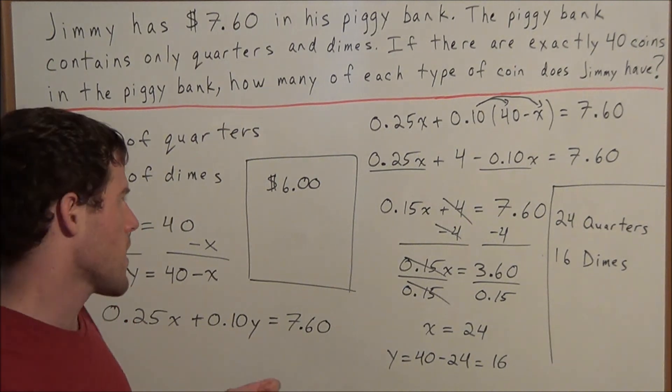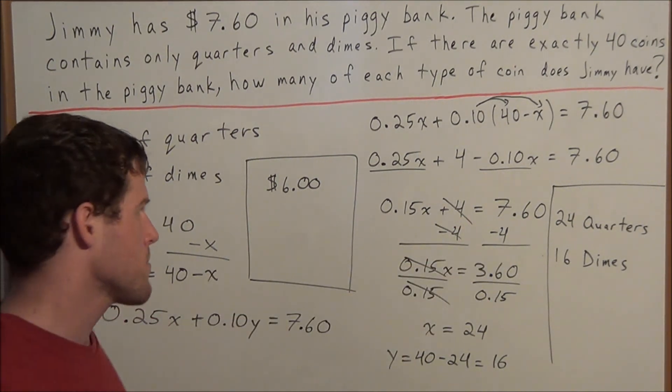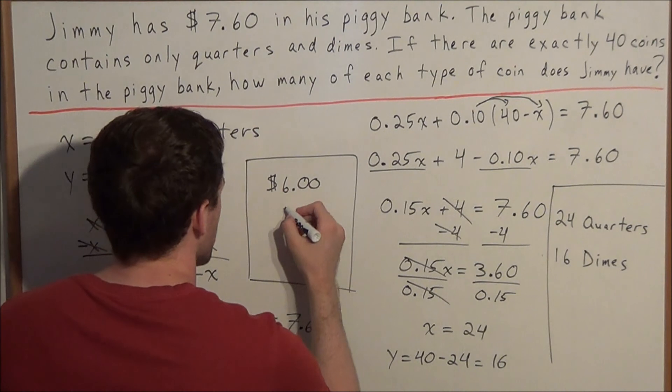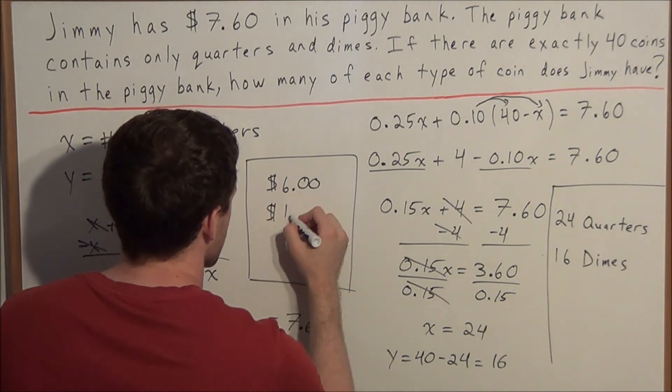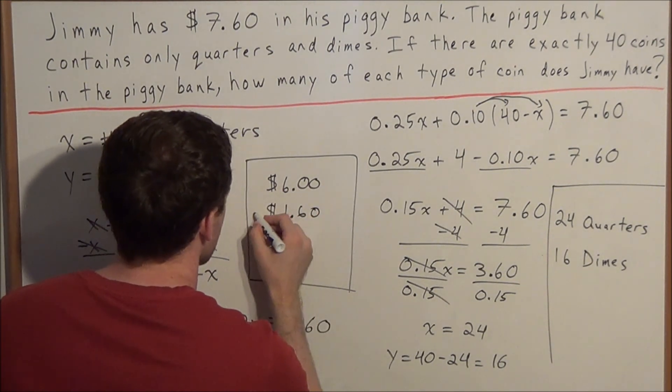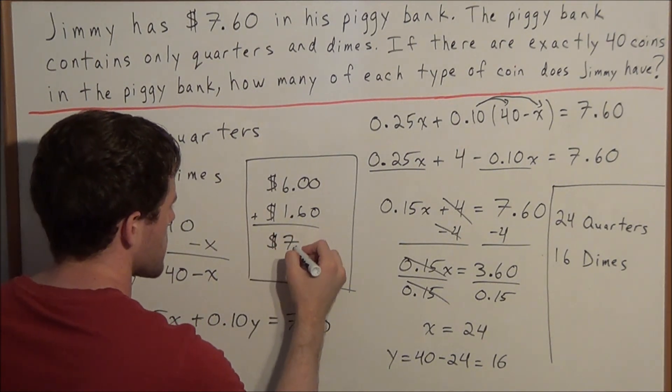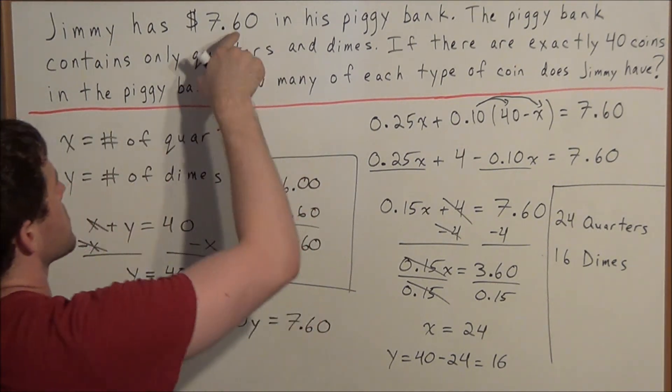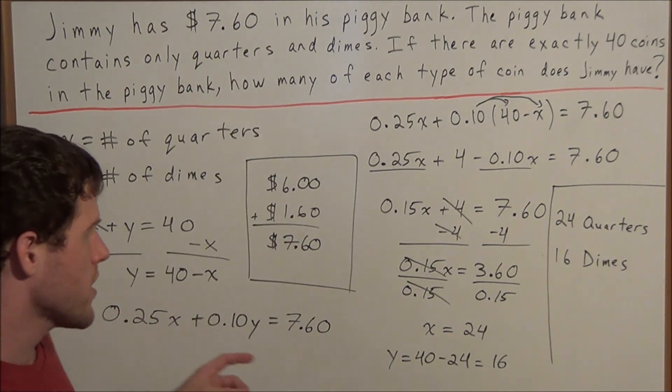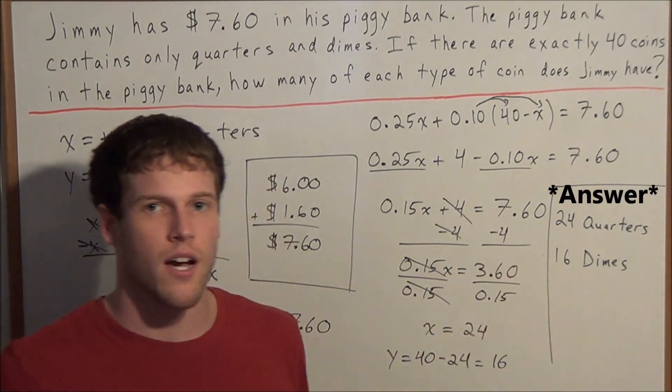So now 16 dimes, we do 16 times 10 is 160. So we have 160 cents, or a dollar 60. So now when we add together 6 dollars and a dollar 60, we get 7 dollars and 60 cents. Which is exactly what we started with in the beginning of the problem. So our final answer, we have 24 quarters and 16 dimes.